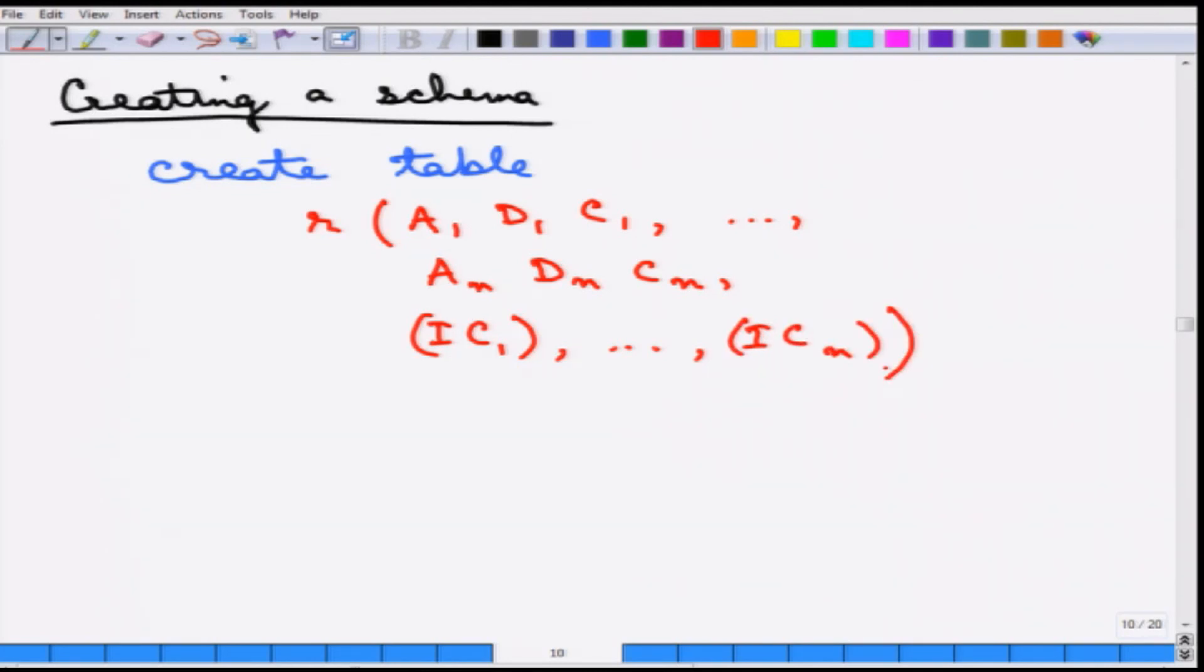So let me go over this. This construct says create a table with the name R. The first attribute of which is called A1, whose domain is D1 and the constraint if there is any is C1 on that particular attribute. You can create whatever number of attributes that you want as part of this R. In the end, you can also specify certain integrity constraints, some other kinds of constraints on each of these attributes. You can say there is an integrity constraint 1 on this, integrity constraint 2 on this, etc.